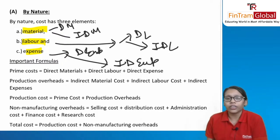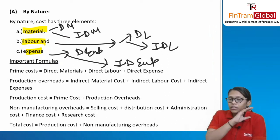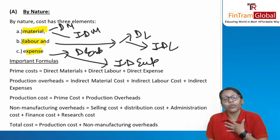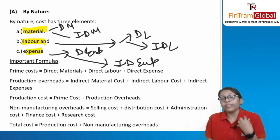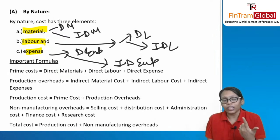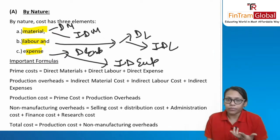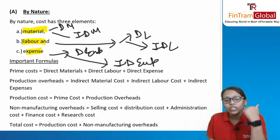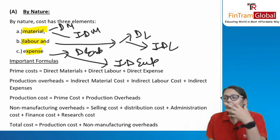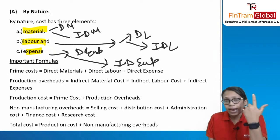Direct material finds its place in the production activity — for example, the cloth used for a t-shirt is direct material. But lubricant oil, thread, nails, buttons — items that don't increase in the same proportion as production — are indirect material. Similarly, labor engaged in the production activity is direct labor; labor in administrative, finance, R&D, or maintenance departments is indirect labor.